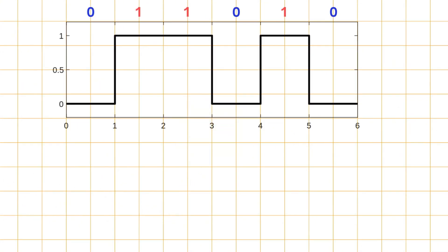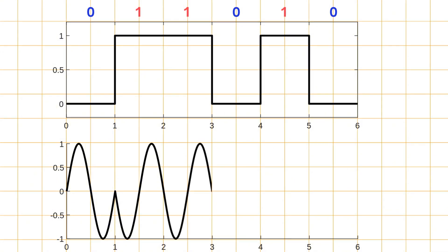Imagine we have a simple digital signal made up of zeros and ones. To transmit the first zero, we use a sine wave with a constant amplitude. Now, when the next symbol is 1, we shift the phase of the wave by 180 degrees to indicate a change. If the following symbol is also 1, the phase stays the same.